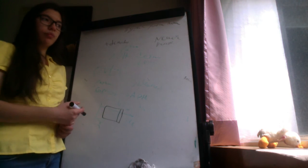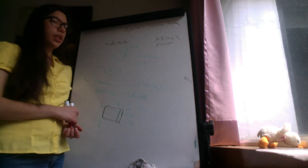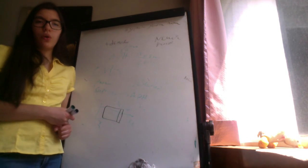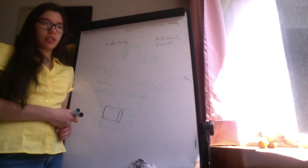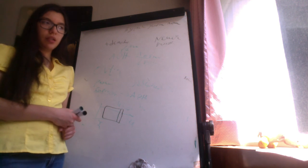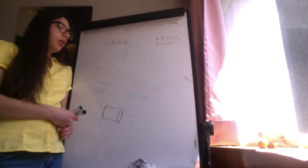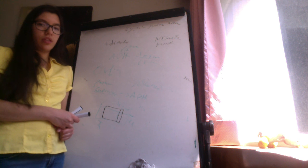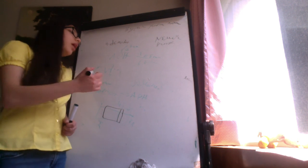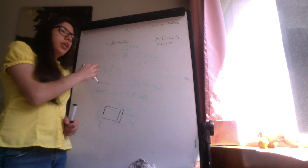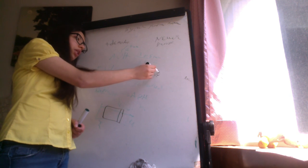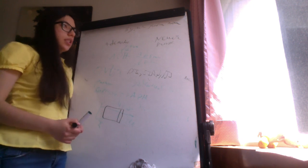Disorders of ADH include syndrome of inappropriate antidiuretic hormone secretion (SIADH), caused mainly by drugs like SSRIs, carbamazepine, tricyclic antidepressants, and others. There is also central diabetes insipidus. If we damage the stalk of the pituitary gland, there is a triphasic state: first diabetes insipidus, then SIADH, and lastly diabetes insipidus again.